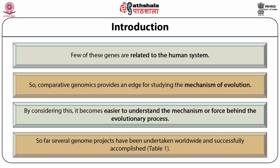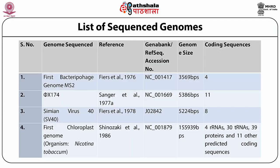Several genome projects have been undertaken worldwide and successfully accomplished. The first genome to be sequenced was of a bacteriophage named MS2 by Fiers et al. way back in 1976, with a genome size of 3569 base pairs and only four coding sequences. The second genome to be sequenced was by Sanger et al. in 1977 of φX174, which had a genome size of 5386 base pairs and 11 coding sequences.